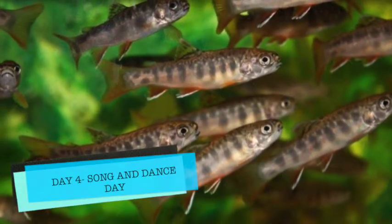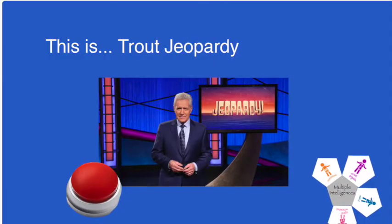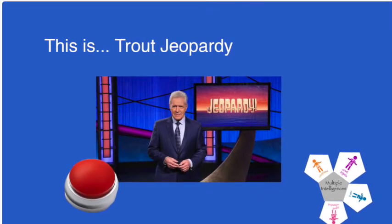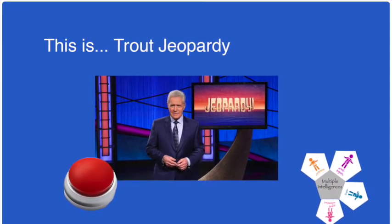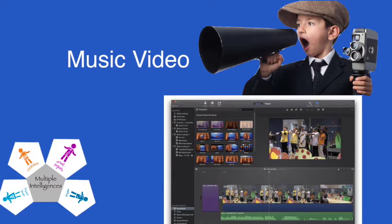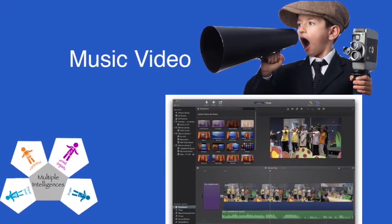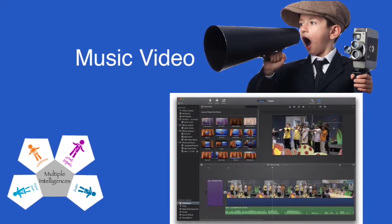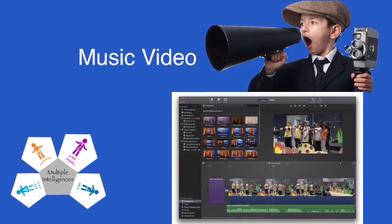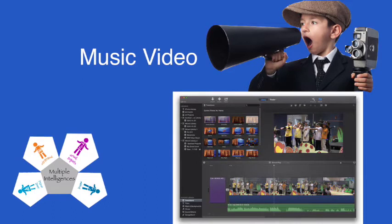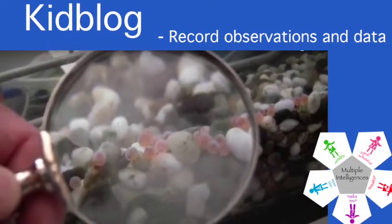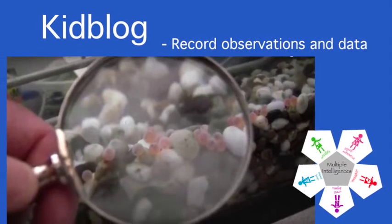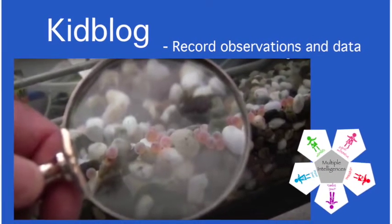Day four is song and dance day. It begins with a terminology review in the format of a Jeopardy-style game show, where students will ring in to answer questions. Next, students will break into groups to write a song about the life cycle of a trout. These songs will be recorded using the video capabilities on the classroom iPads and edited using the iMovie application. The observation and record-taking time today will be more interesting as most of the alevin are now full-fledged fry swimming around the aquarium.